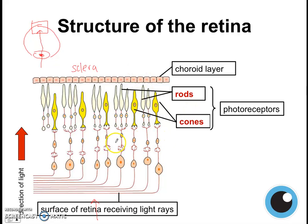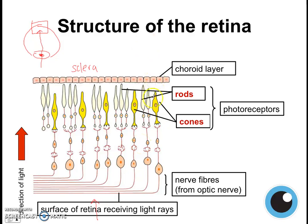You'll notice that in front of the photoreceptors there are some nerves — nerve fibers which will eventually move to the optic nerve. So when light comes into the retina, it will stimulate the rods and the cones. The rods and cones will generate electrical impulses, and that will cause these neurons here to be stimulated, which will then cause these neurons here to be stimulated, which will carry the nerve impulses to the optic nerve.